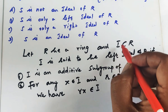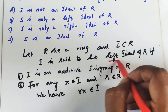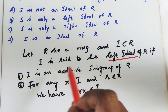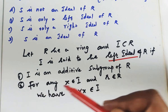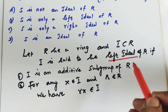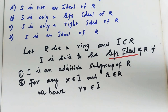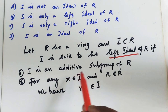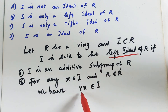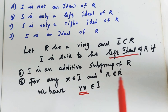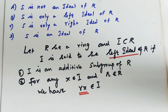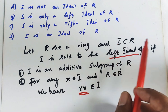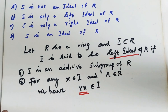So for a subset I to be a left ideal of R: condition one — I is a subgroup with respect to addition; condition two — take any element from the subset I and any element from the ring R, form the product r into x, and that product must remain in I. That is the left ideal definition.